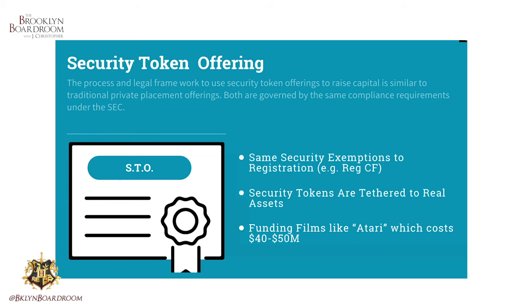In order to get to the place of a security token, you have to go through the process of a security token offering. This is how you begin before you start the tokenization process. Basically, the same security regulations that apply to equity investment in your film apply here — all the same regulations and exemptions. It's called a security token offering process, or STO, and these tokens are tethered to real assets.